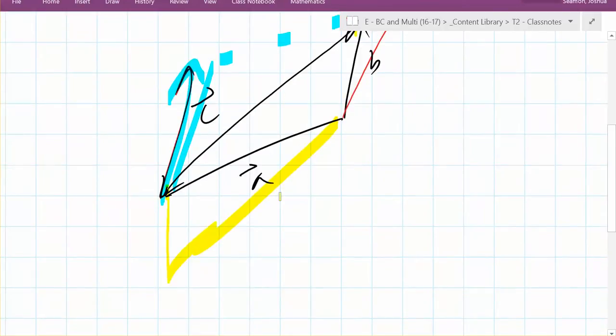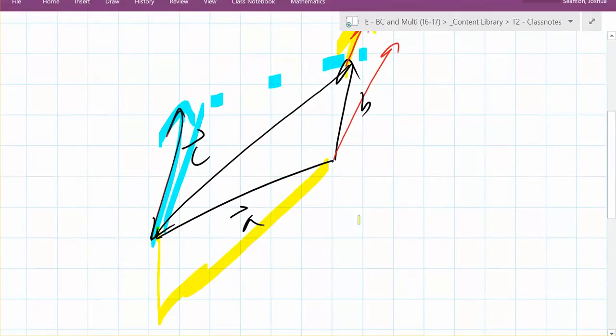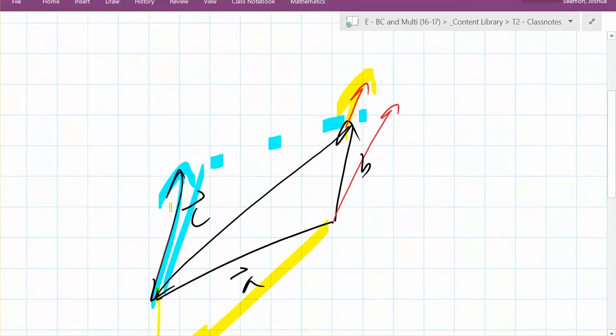But then what about this one right here? What parallelogram is this the area to? This one right here, right? See that? And then what's this one going to be? And then B, what's that one going to be? Like that one right there. Does that kind of make sense?